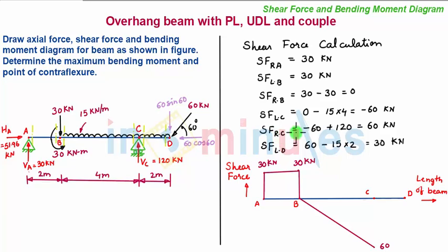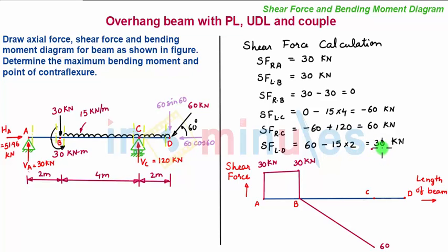Now the shear force towards the right of C is plus 60 kN, meaning the shear force is changing from negative 60 to plus 60. So over point C, we plot a point of plus 60 kN using a proper scale, and connect the two values at point C with a vertical line.